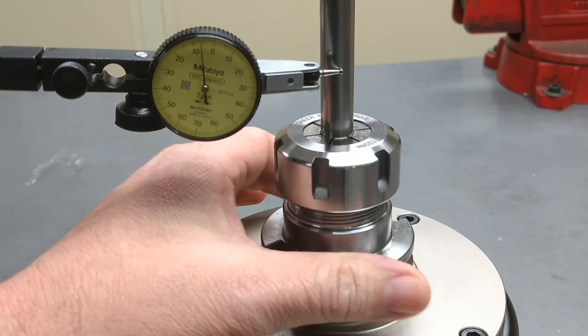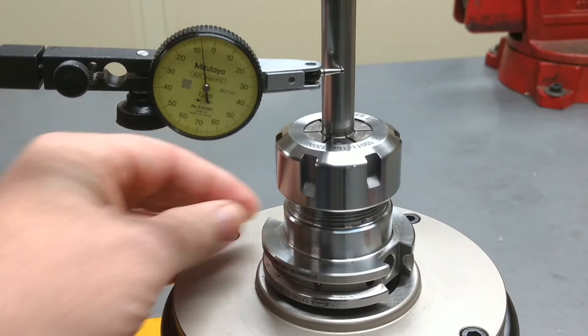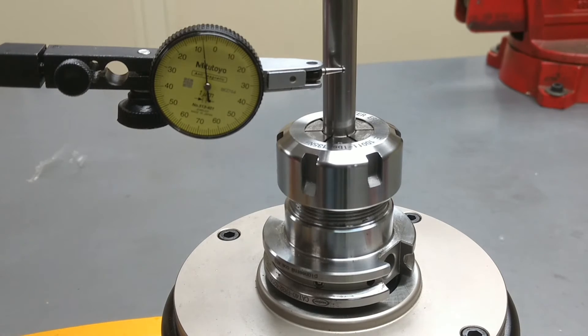So just slightly under two micron TIR. That's two-thirds of one-tenth runout.